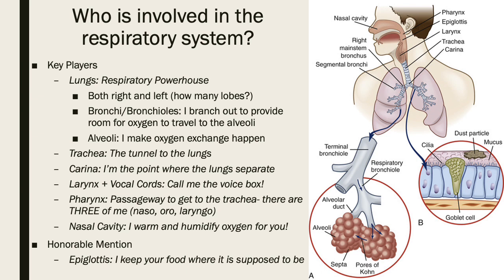An honorable mention to the epiglottis — the flap that helps protect your food from going down into the lungs and causing aspiration. It's part of our body's protective mechanisms so that we are able to breathe and swallow without simultaneously inhaling our food.